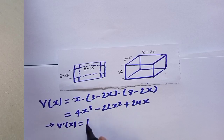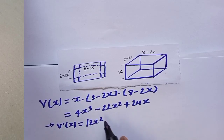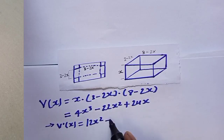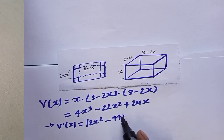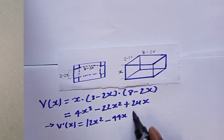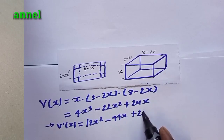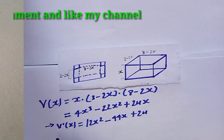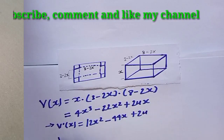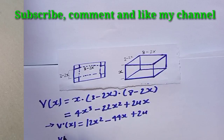Now let us find the first derivative. When you differentiate, you get V'(x) = 12x² minus 44x plus 24.